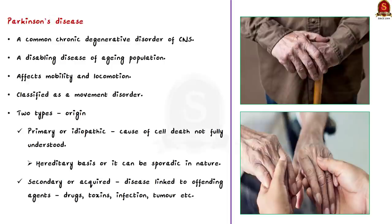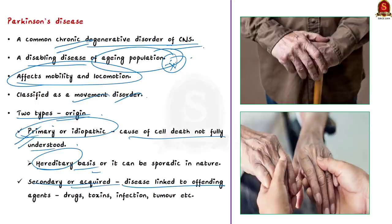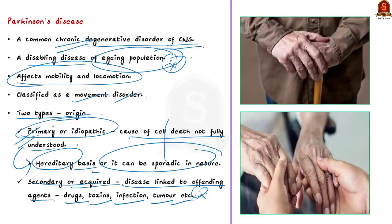Parkinson's disease is a common chronic degenerative disorder of the central nervous system. It is a disabling disease of the aging population and affects their mobility and locomotion, so it is classified as a movement disorder. Parkinsonian syndromes can be divided into two types according to their origin. The first type is primary or idiopathic, where the cause of cell death is not fully understood. The second type is secondary or acquired, where the disease can be linked to various offending agents such as drugs, toxins, infection, tumor, etc. Idiopathic Parkinson's disease can have a hereditary basis or it can be sporadic — occurring at irregular intervals or only in a few isolated places.